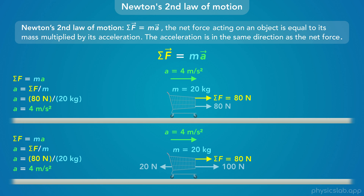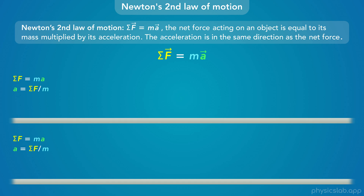The second thing to remember is that the acceleration is in the same direction as the net force. So if the forces were switched and the net force was 80 newtons to the left, the cart would accelerate to the left. Third, this equation relates net force to acceleration — it doesn't say anything about the velocity of the object. The change in velocity is related to the force, but not the velocity itself.